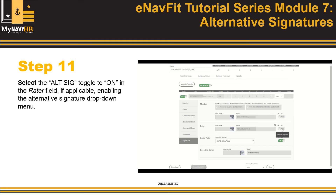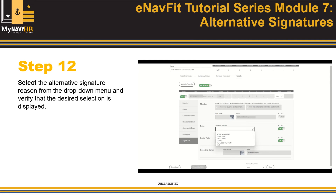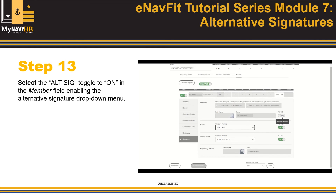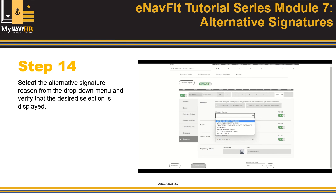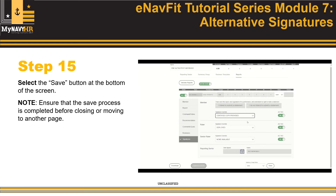Step 11: Select the Alt-Sig toggle to On in the Rater field, if applicable, enabling the Alternative Signature drop-down menu. Step 12: Select the Alternative Signature reason from the drop-down menu and verify that the desired selection is displayed. Step 13: Select the Alt-Sig toggle to On in the Member field, enabling the Alternative Signature drop-down menu. Step 14: Select the Alternative Signature reason from the drop-down menu and verify that the desired selection is displayed. Step 15: Select the Save button at the bottom of the screen.